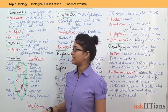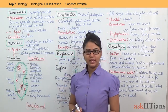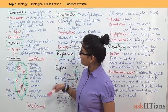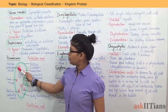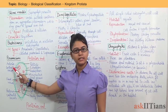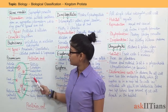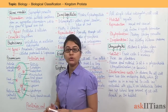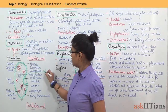Under protozoans, an example is paramecium. Paramecium is a ciliated protozoan. In the diagram, it is shaped like a shoe — it has two ends: an anterior end and a posterior end. There are two contractile vacuoles present: the anterior contractile vacuole at the anterior end and the posterior contractile vacuole at the posterior end. Food vacuoles are also present. Paramecium has two nuclei: a micronucleus and a macronucleus.